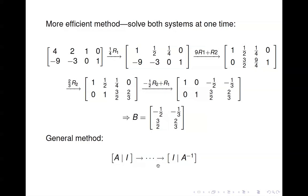Notice that since all row operations are reversible, we could go backwards: start with A inverse augmented by the identity matrix, and we can make A inverse look like the identity matrix, with A appearing on the right. So the inverse of A inverse is just A.